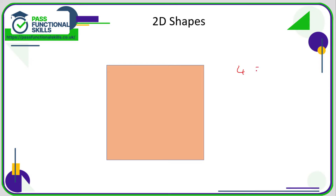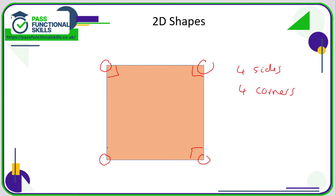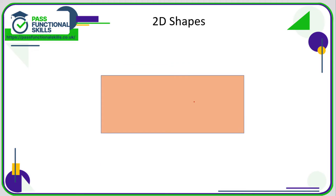If we look at a square — it has four sides, four corners, four angles, and those angles are all right angles. And as we've discussed, it has four lines of symmetry. With a rectangle, it also has four sides, four angles, and four corners.